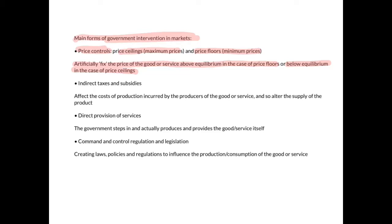The second type is indirect taxes and subsidies, grouped together because they both affect the costs of production incurred by producers and so alter the supply of the product. Indirect taxes raise the costs of production, leading to a decrease in supply, while subsidies do the opposite — they lower the costs of production, leading to an increase in supply.